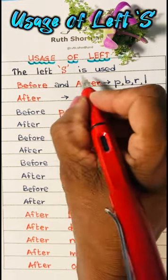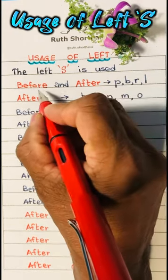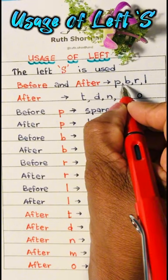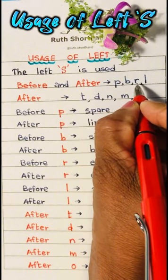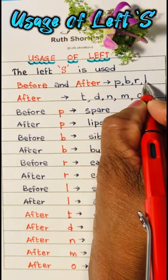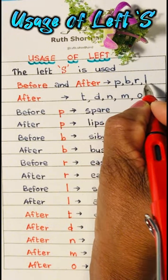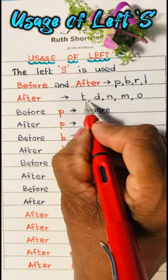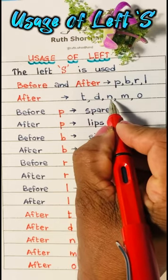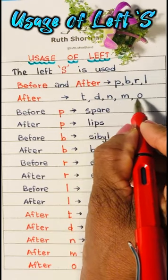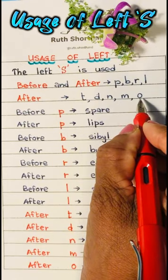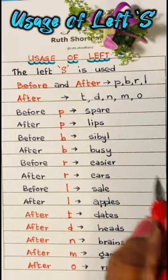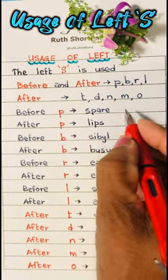The left S is used before and after P, B, R and L. Then after T, D, N, M, O.